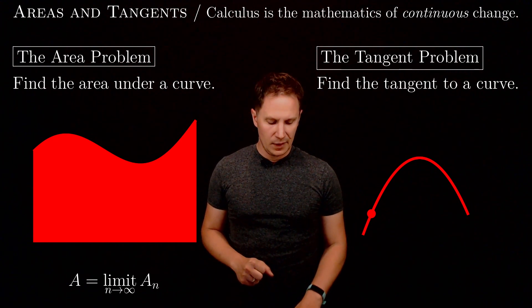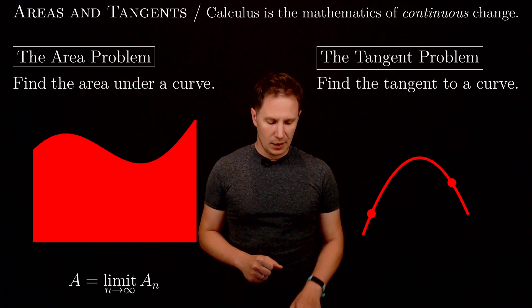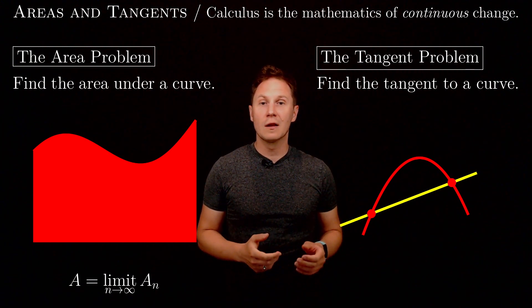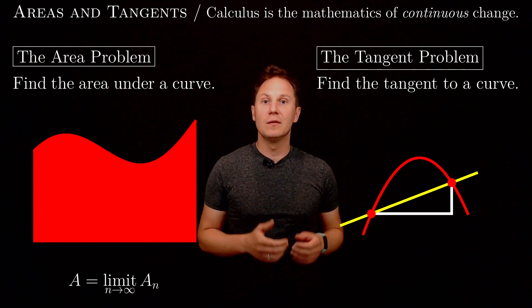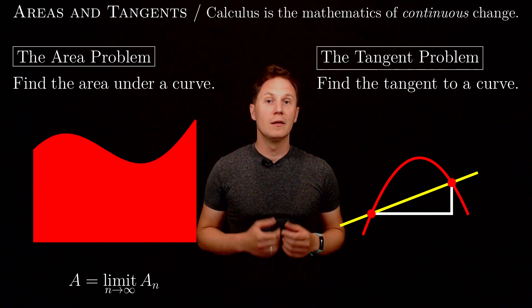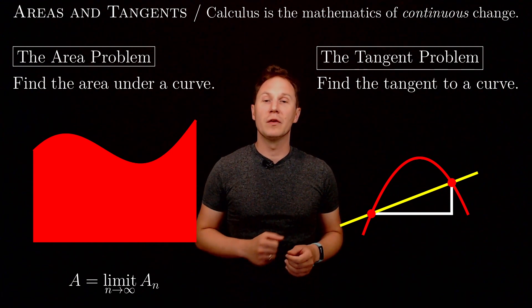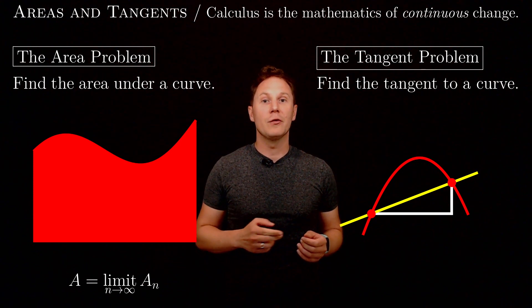The way we solve the tangent problem is by picking another point on the curve, connecting the two points with a secant line, then measuring the horizontal and vertical distances between the points, thus computing the slope of the secant line as the rise over run.